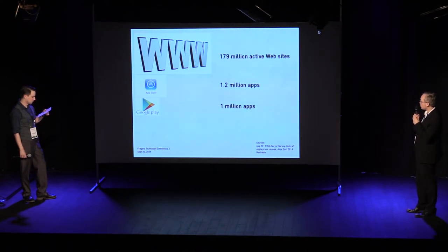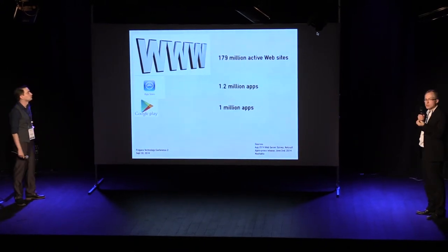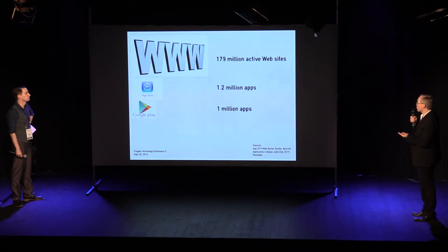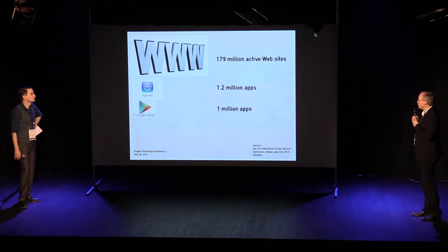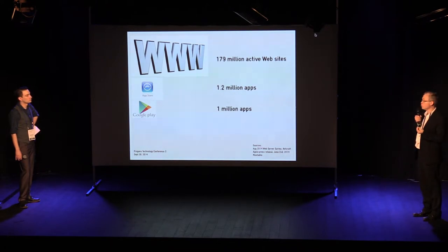Today, we have 179 million active websites — websites where there's really something with up-to-date content that was not produced automatically. 179 million — that's huge — especially compared to the number of mobile applications: 1.2 million applications on the Apple Store and 1 million on Google Play. So today, we're looking at a paradoxical situation. All internet users are switching more and more to mobile technology, but for publishers to reach the internet user is increasingly costly and complex.